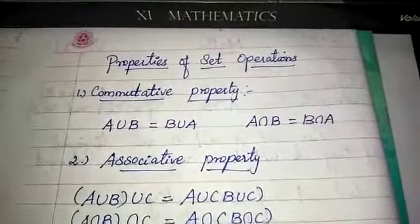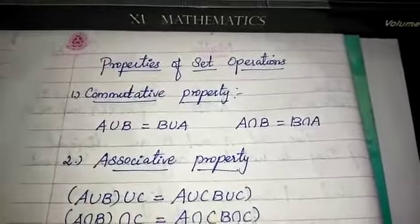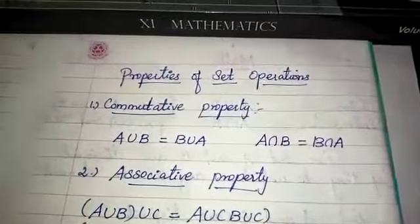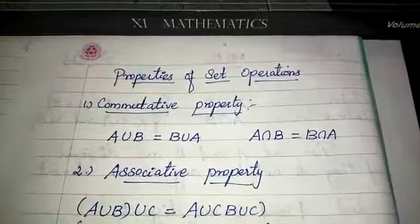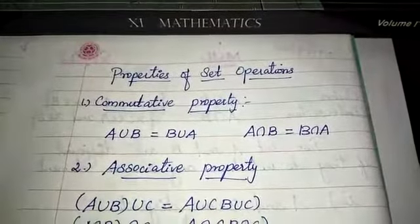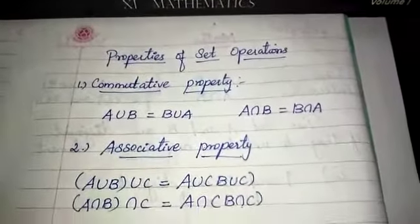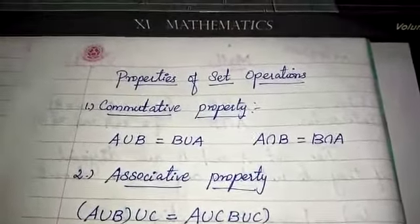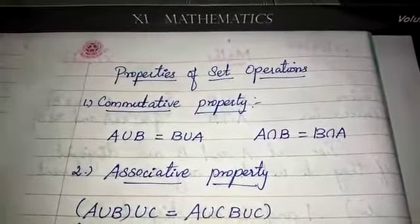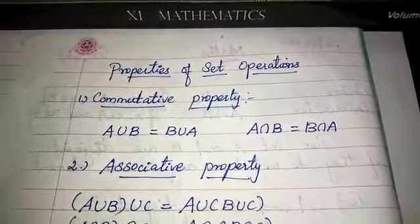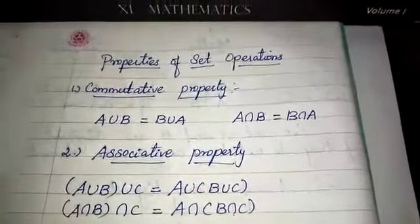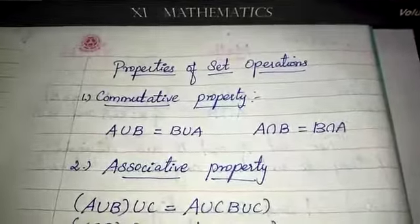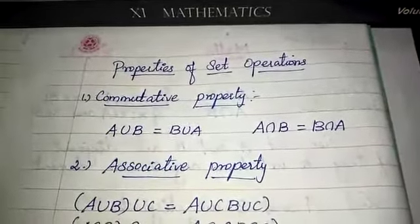Properties of sets — 10th standard topics. The main properties are: Commutative property, Associative property, Identity property, Distributive property, Idempotent property, and Absorption property. Commutative property: A union B equals B union A.